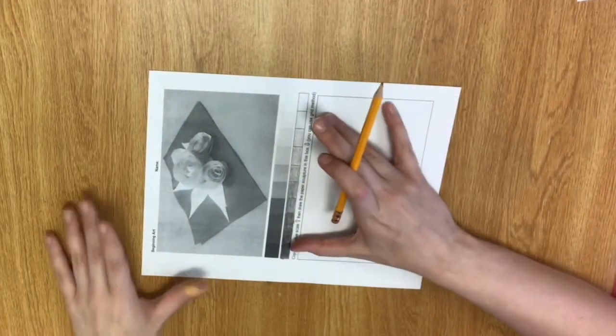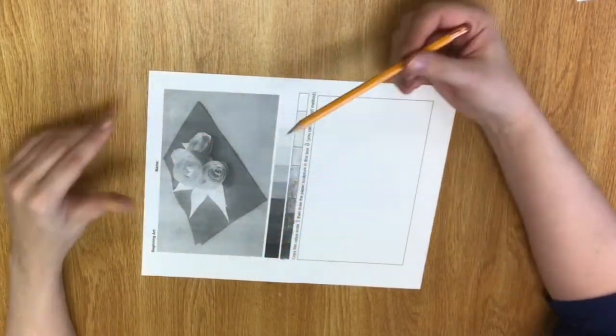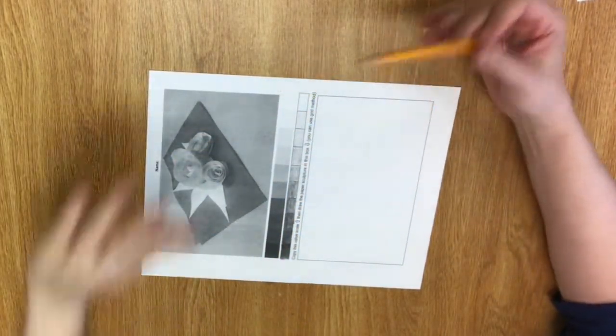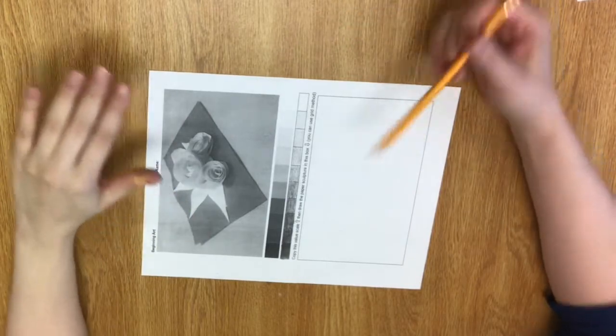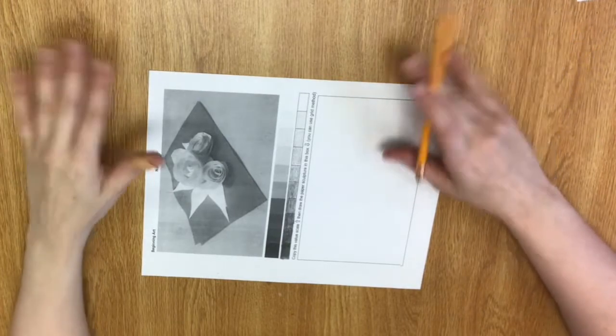Okay, now that I have my value scale established, I want to draw the general shapes going on here. And you can use grid method if you want. You could try and freehand it, but we're still learning, so you can use grid method.